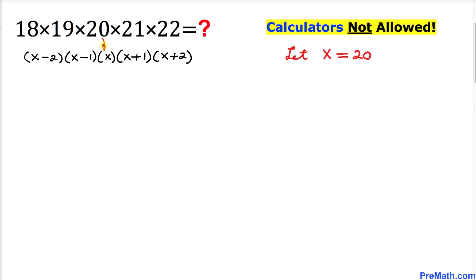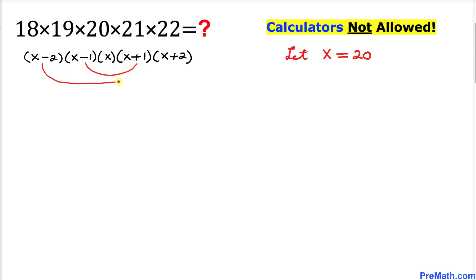So I wrote down: 20 as x, 19 as x minus 1, 18 as x minus 2, 21 as x plus 1, and 22 as x plus 2. Now for the next step, let's go ahead and rearrange these numbers. I am going to put x minus 1 and x plus 1 together, and likewise x minus 2 and x plus 2 together.